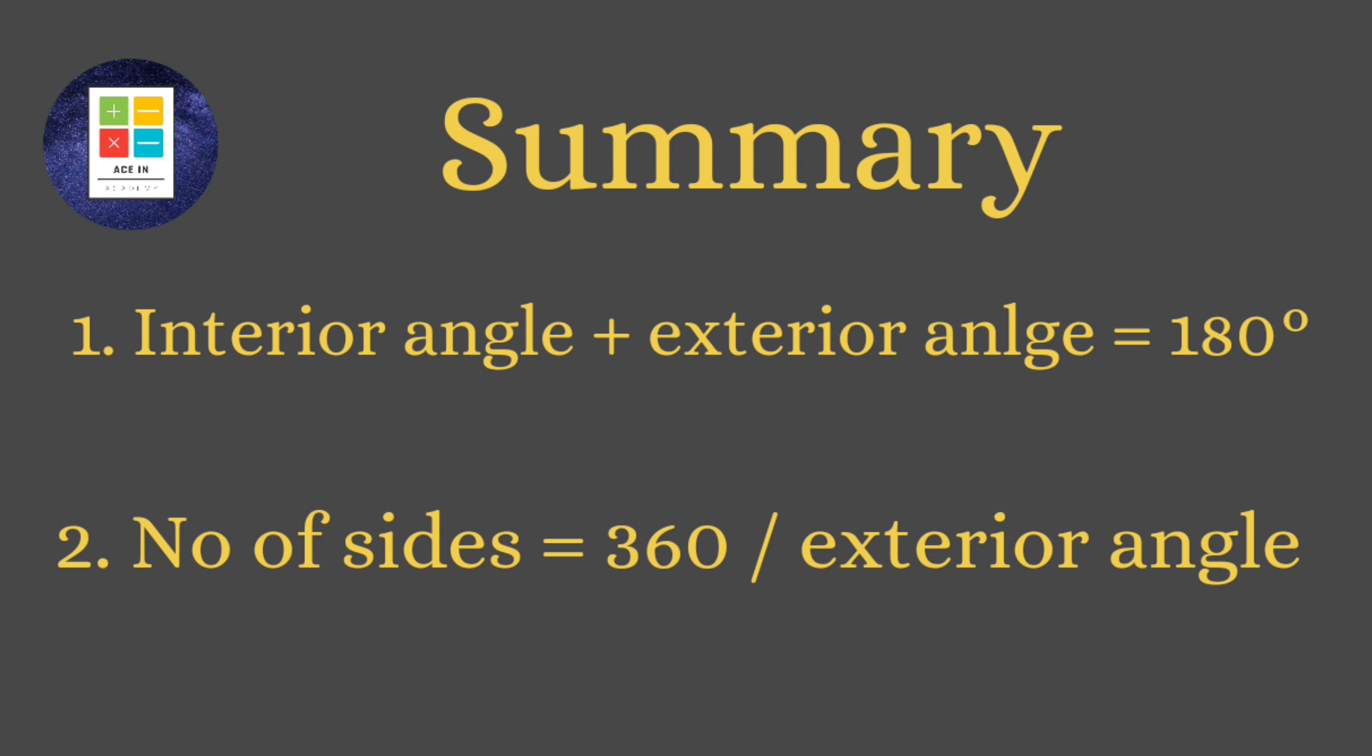The second point that we have covered is that the number of sides in a regular polygon is equal to 360 divided by e, where e is the value of the exterior angle of the regular polygon.